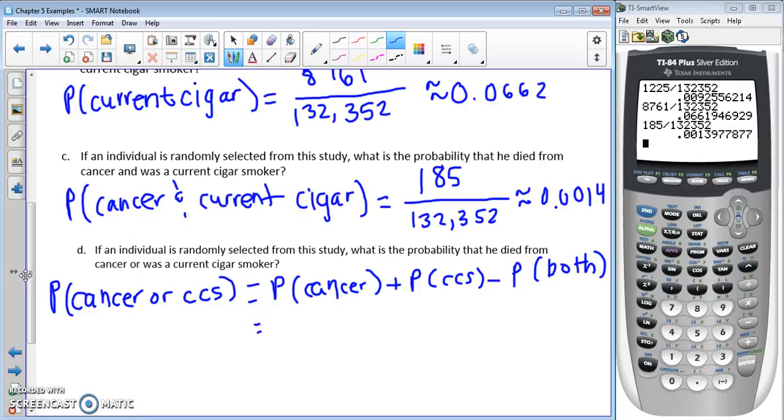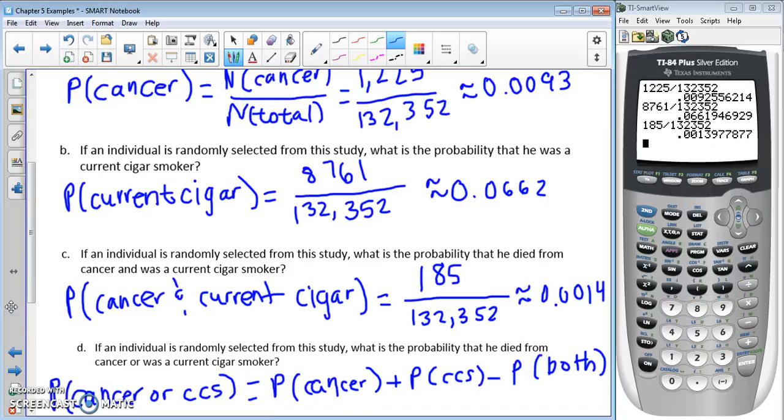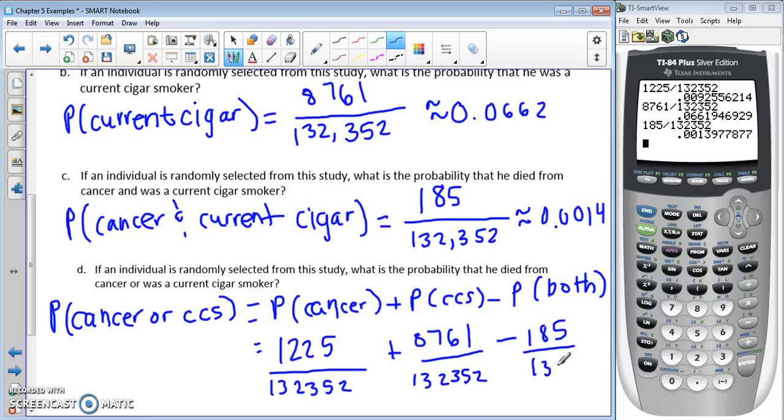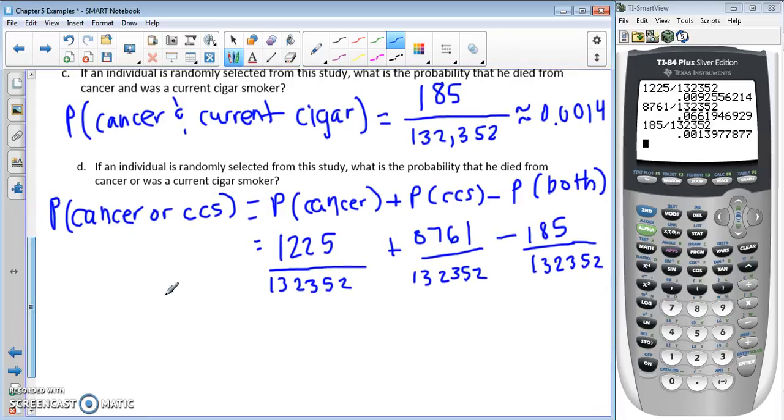Cancer, we have that from part A: 1,225 of our total. Current is 8,761, and both is 185. All these are out of the total. Since they're all the same total, I can just figure out what the numerator is and then put that over the denominator. So 1,225 plus 8,761 minus 185 equals 9,801 over 132,352.